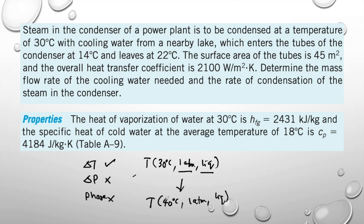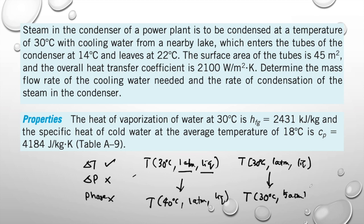If you want to change the pressure, you have to maintain the temperature. So at 30°C and 1 atm in the liquid phase, if you want to change the pressure to 5 atm, you maintain the temperature and increase the pressure to 5 atm while keeping the liquid phase constant. The change is only for pressure. You cannot change temperature and pressure at the same time.